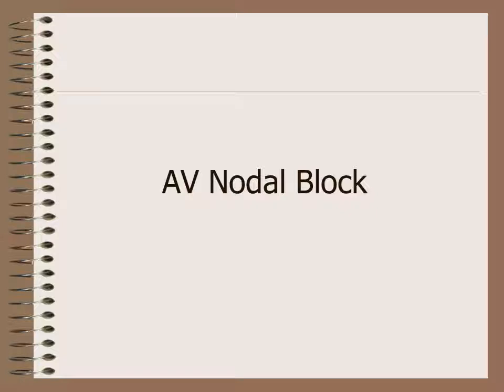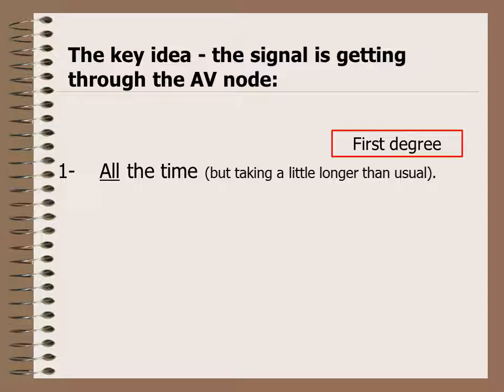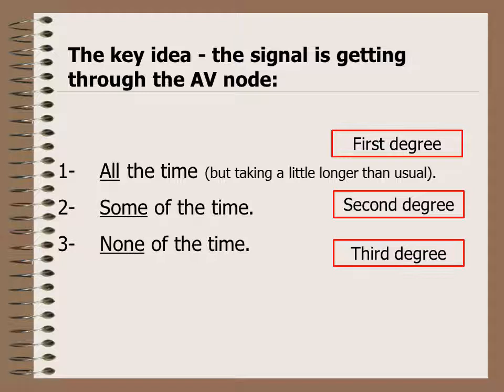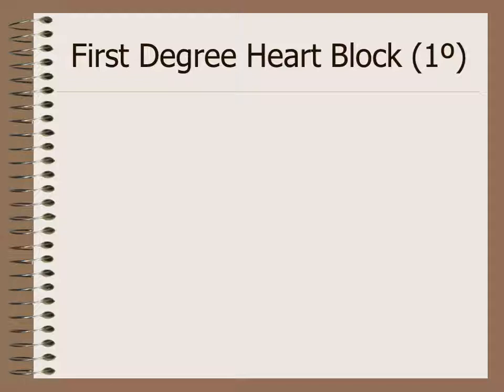Now let's see how AV nodal block looks. The key idea is: the signal gets through the AV node all the time but takes longer than usual — this is first degree heart block; or the signal gets through the AV node only some of the time — this is second degree heart block; or the impulse does not go through the AV node at all — this is third degree heart block.